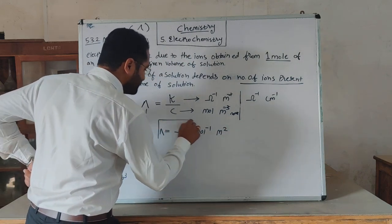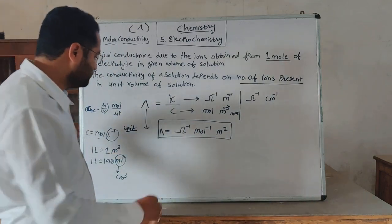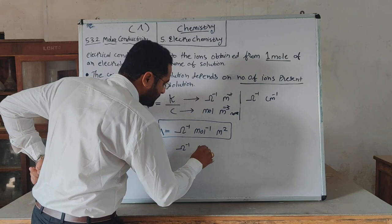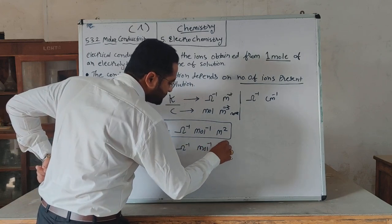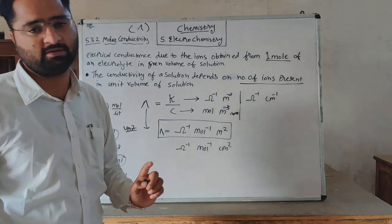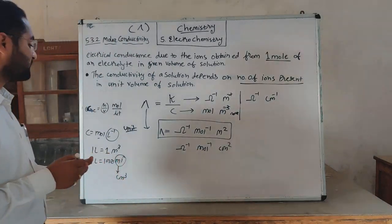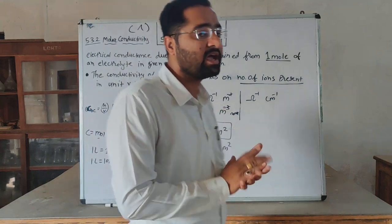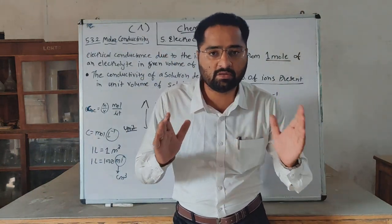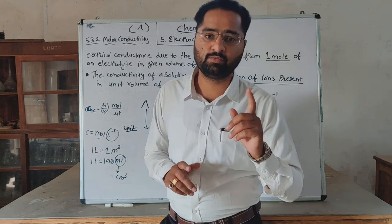This is the unit of molar conductivity. The difference between conductivity and molar conductivity: conductivity considers 1 centimeter cube of volume, while molar conductivity considers the total volume containing one mole of electrolyte.